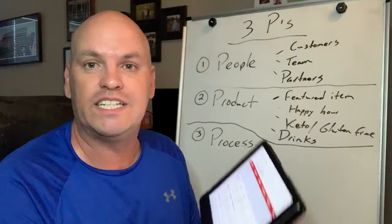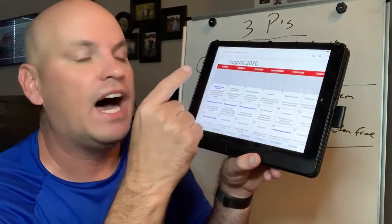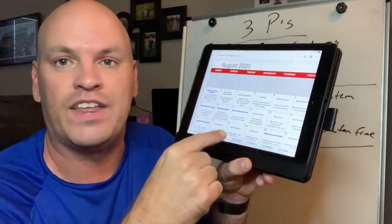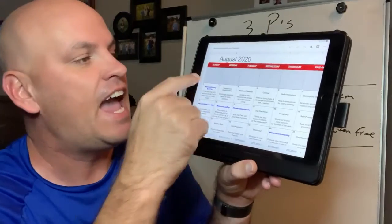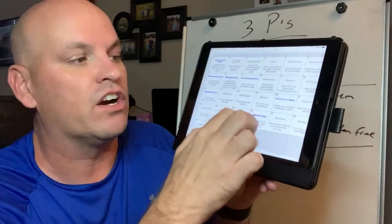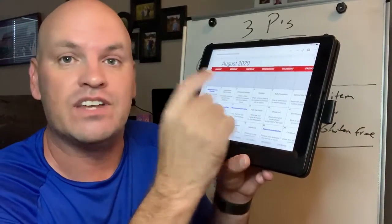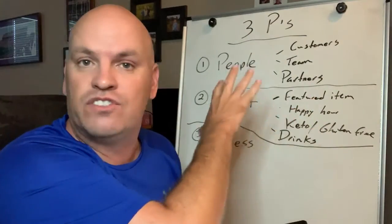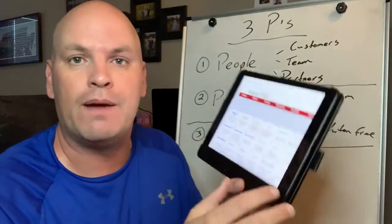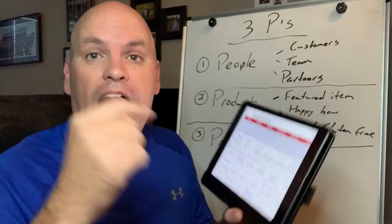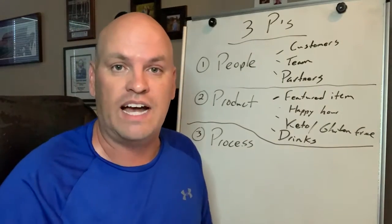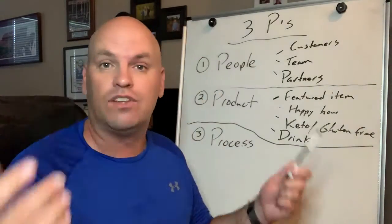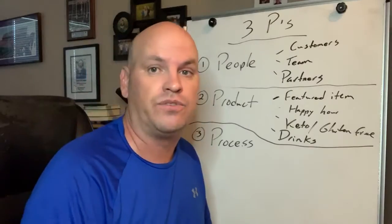But before I get started, I wanted to give you a quick reminder about this 365 restaurant marketing planner that I have. Every single day of the year, I have different ideas of exactly what you can post, and a lot of it covers the same framework of the three P's. So I've got a link below if you want to grab it, and it'll give you lots of great ideas for your restaurant.